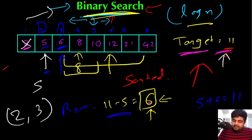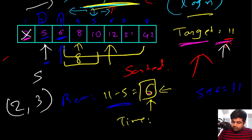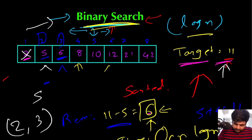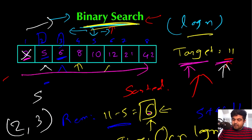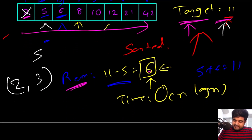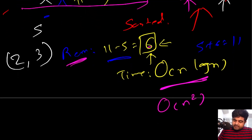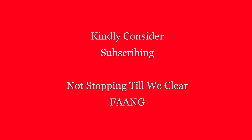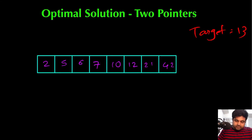Binary search works better than brute force. The time complexity is O(n log n) because in the worst case we iterate over every element — O(n) — and for each we do a binary search — O(log n). This is much better than the O(n²) brute force. However, this is still not the most optimal solution. There is one more approach that gives us the answer in O(n) time.